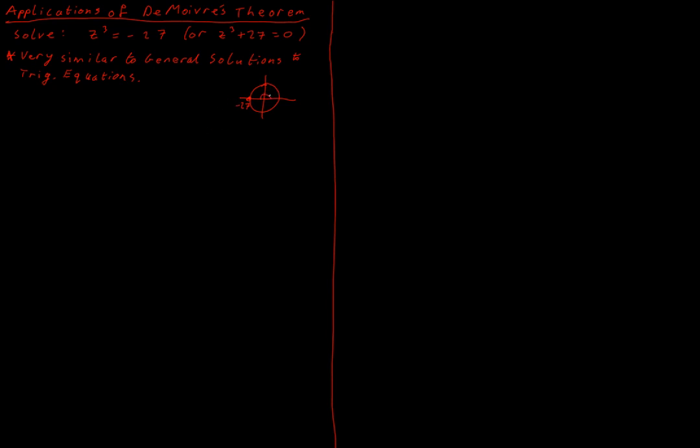So this is the angle I need. And very easily, I can see that my modulus is just 27, because I'm not going off on a triangle, I am literally just going along my axis, and I've gone minus 27 away from my origin. So my modulus is just 27.